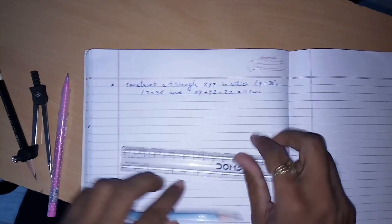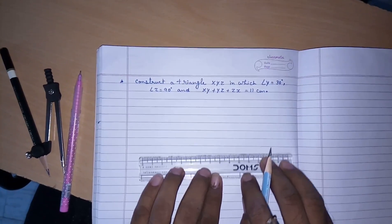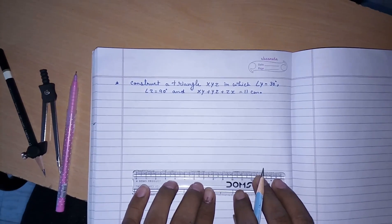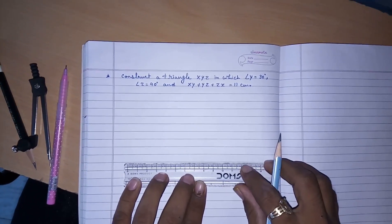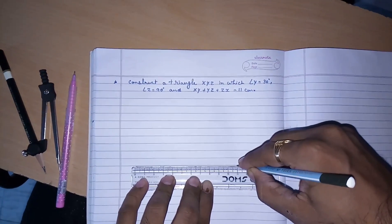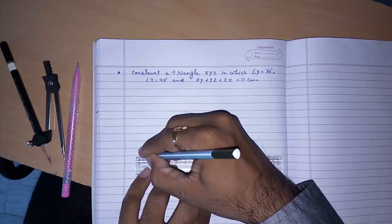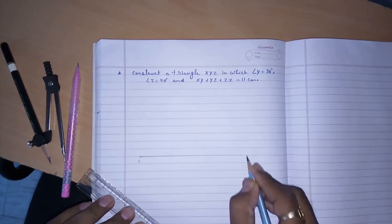We start by drawing a line of 11 cm. Give this point's name A and B.